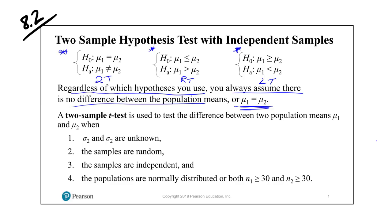What we're talking about here is a two-sample t-test for independent samples. The population variances — σ1 and σ2 — are unknown, and that's what leads us to the t-test, because when the population variances are unknown we use the t-test. The samples have to be random, the samples have to be independent, and the populations are normally distributed or both sample sizes are at least 30.